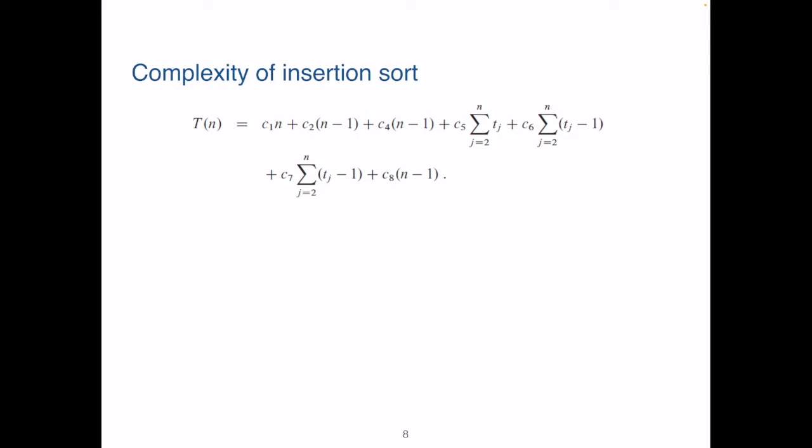Now for the overall complexity of this algorithm T(n), we multiply the cost by the number of times for each line of instruction and sum them up. In the best case, when the input list is already sorted, the inner while loop is always skipped. We check the while condition once and never get into the loop body, so tj will be one. Then we can write T(n) accordingly. So in the best case the complexity of insertion sort is a linear function of the input size n.